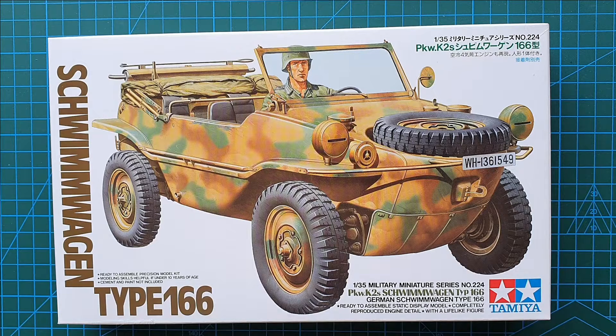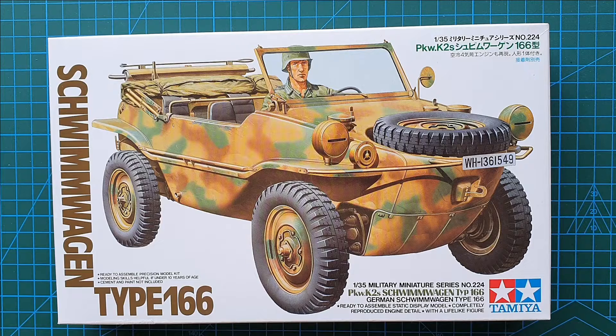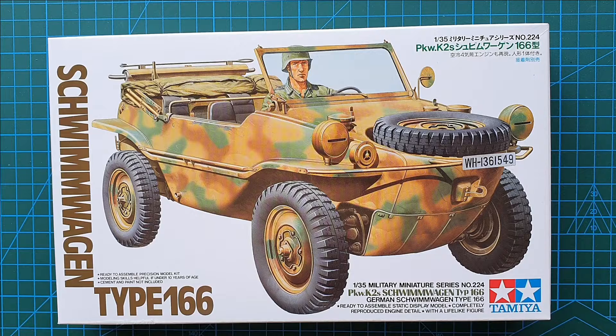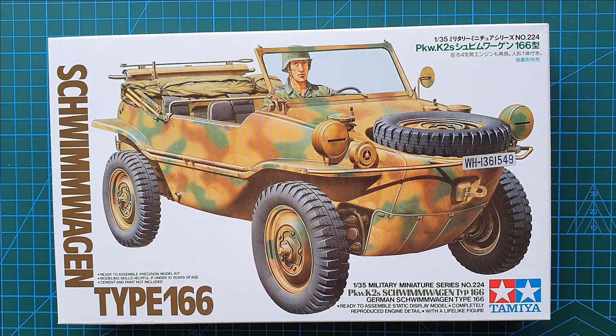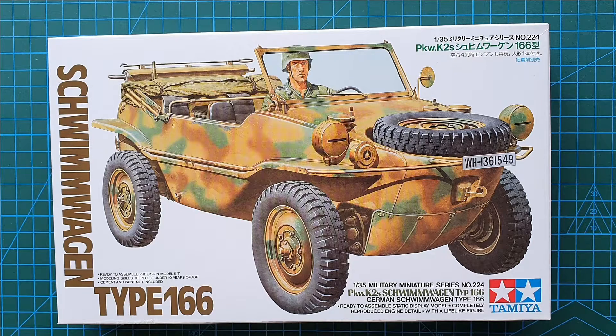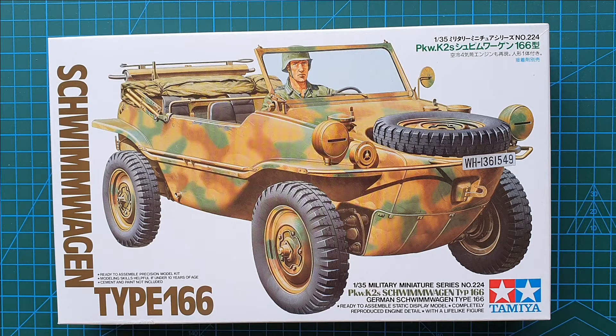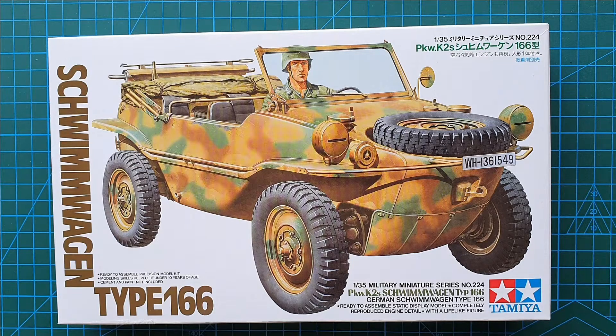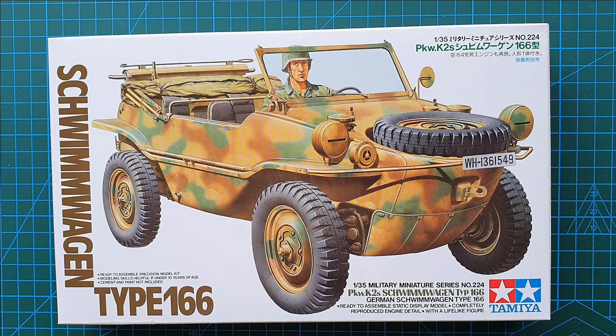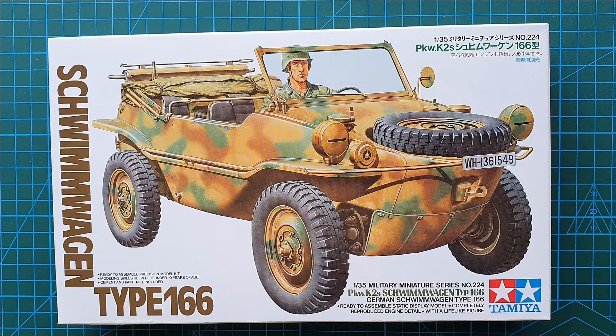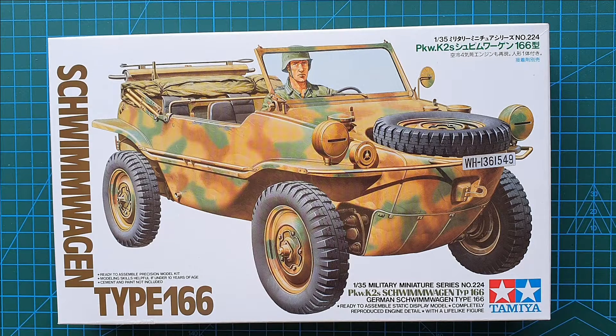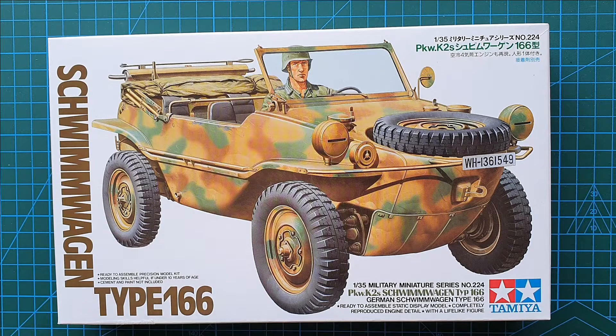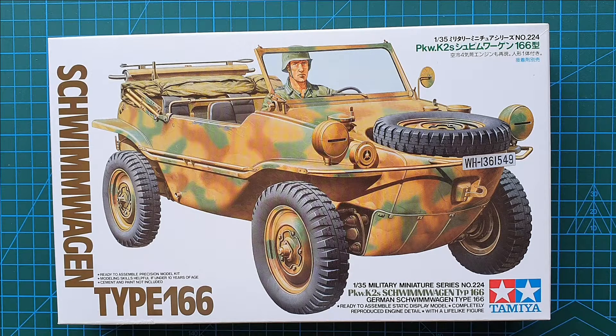The original Schwimmwagen came out in 1970. The kit number for that one was MM103, and I do remember making that back in the 70s. It was a fairly basic kit if I remember rightly, and it was possible that you could actually float that kit the way it was built. It was designed so that you could actually float it.